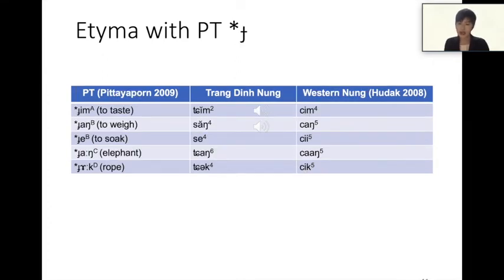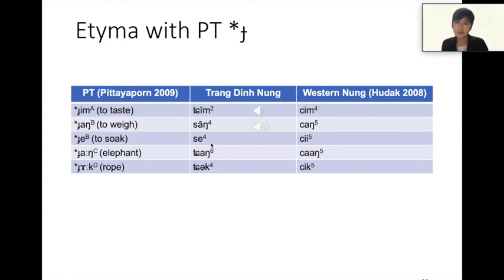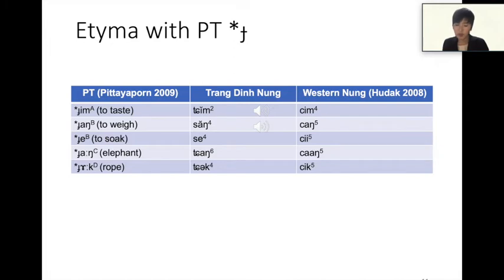This table shows etyma with prototype *j. The word 'to taste' has A-tone and in Chanding NUN is jim. The word 'to weigh' has B-tone and in Chanding NUN is sam. As you can see, prototype *j without B-tone is realized as d, and *j with B-tone is realized as s in Chanding NUN. In Western NUN, prototype *j is realized as t regardless of tone.